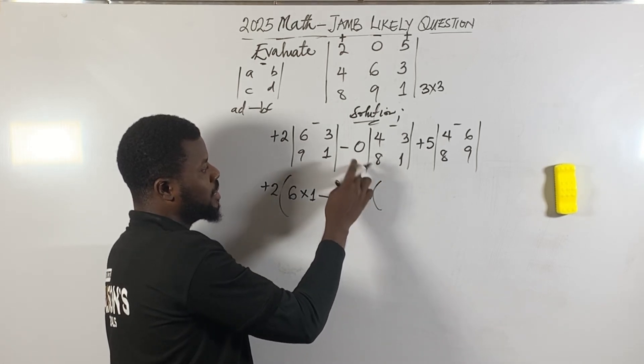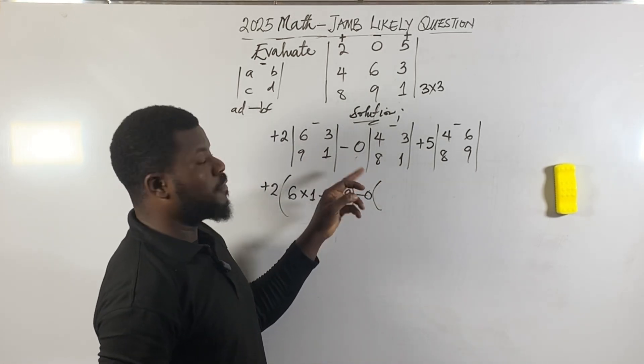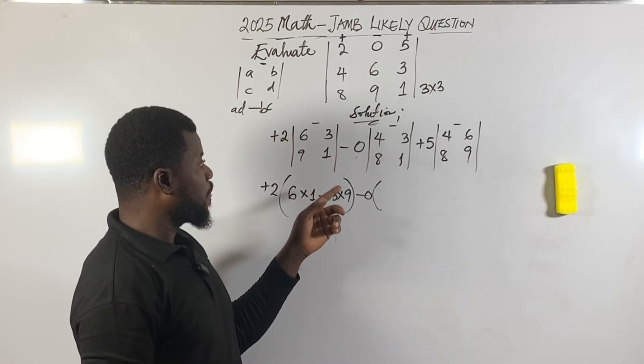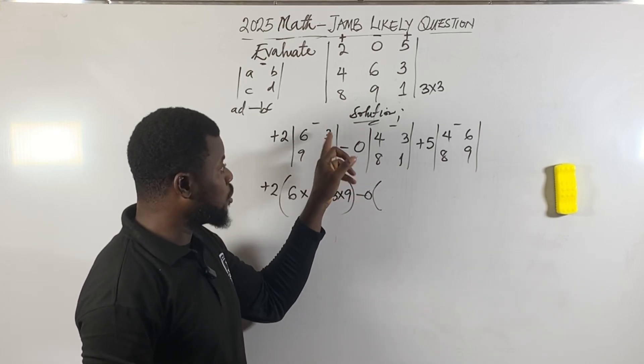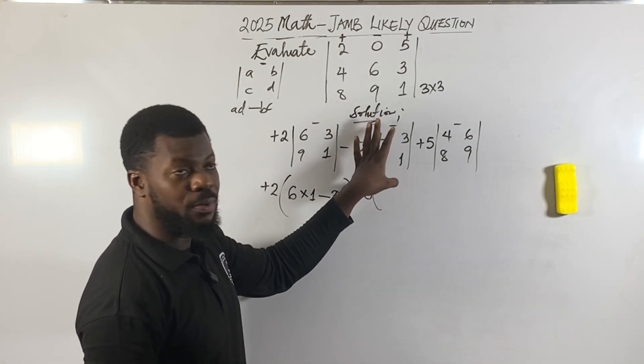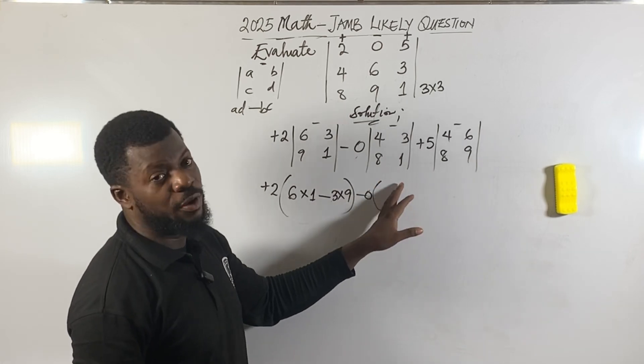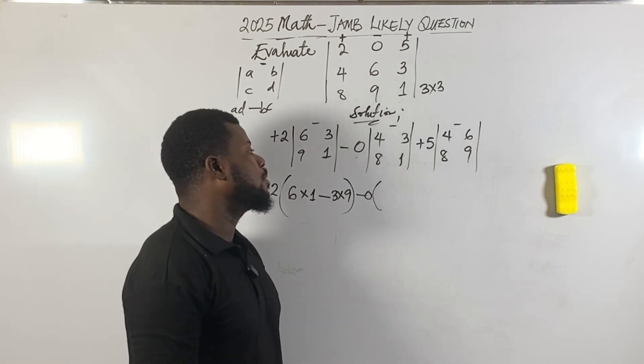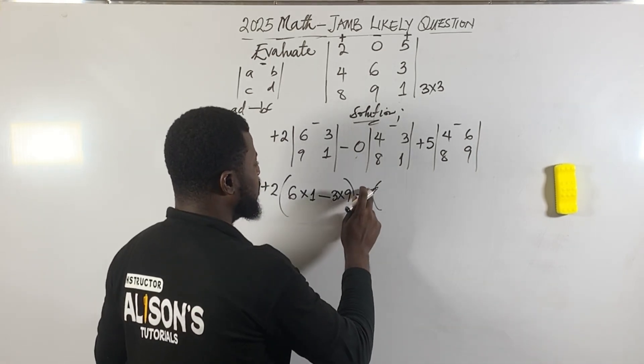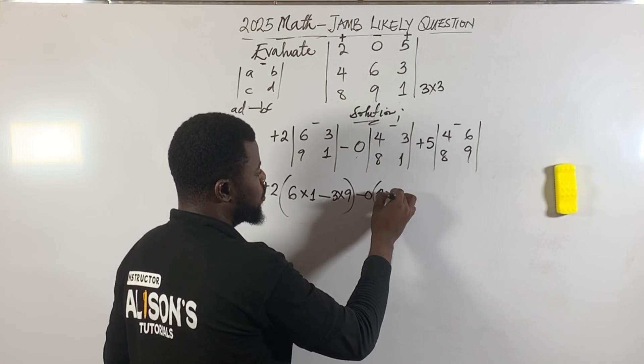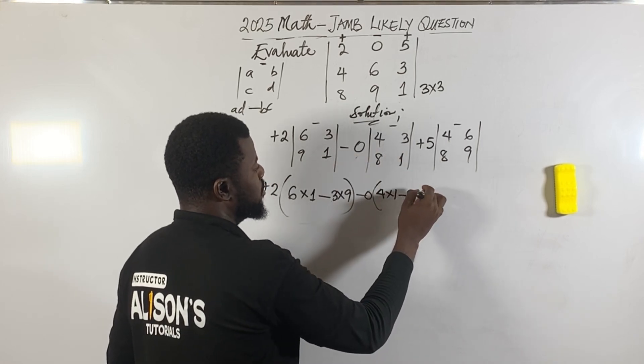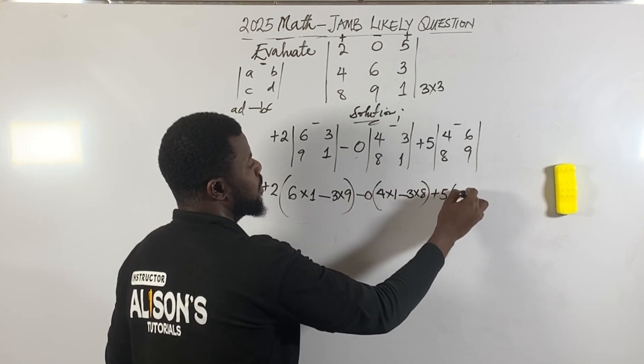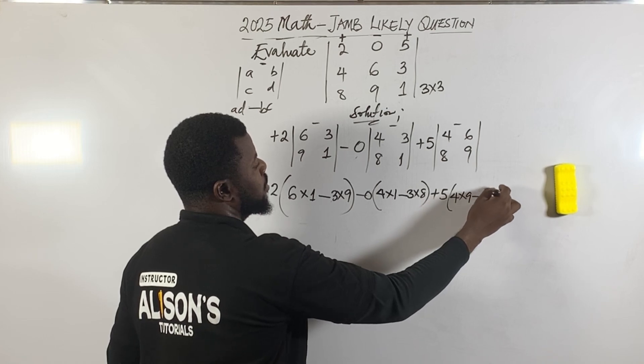Minus 0 into (4×1 - 3×8). Anytime I see zero it makes me happy because zero is part of the shortcut - zero times anything equals zero. So this side we can skip. Then plus 5 into (4×9 - 6×8).